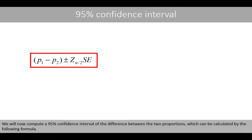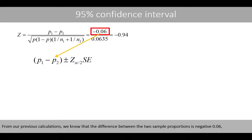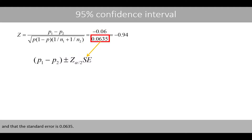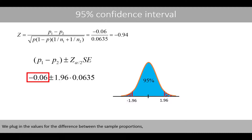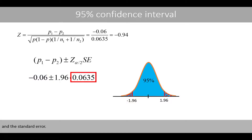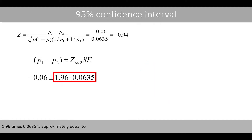We will now compute a 95% confidence interval of the difference between the two proportions. From our previous calculations, we know that the difference between the two sample proportions is negative 0.06, and that the standard error is 0.0635. As we know from the normal distribution, the upper critical value that defines 95% of the area of the standard normal distribution is 1.96. We plug in the values for the difference between the two sample proportions, the critical value, and the standard error.